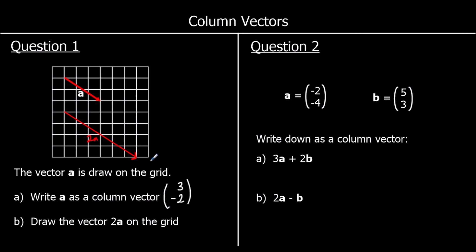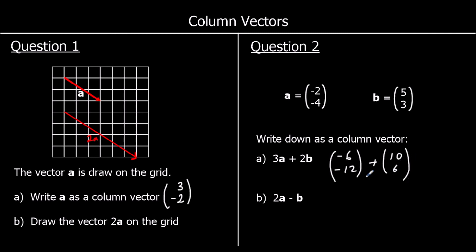Question 2. Write down as a column vector 3A plus 2B. So 3 lots of A — if we multiply the changes by 3, that's negative 6, negative 12. And 2B would be 10 to the right and 6 up. Adding these together: negative 6 plus 10 is 4. And negative 12 plus 6 is negative 6.